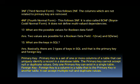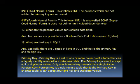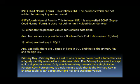What are the keys in SQL? Basically there are two types of keys in SQL — the primary key and the foreign key. A primary key is a set of one or more columns of a table that can uniquely identify a record in a database table; it cannot accept null or duplicate values, and only one primary key can exist in a single table. A foreign key is a column in a table that is the primary key in another table, and it can accept multiple null and duplicate values.